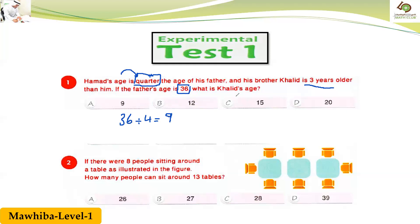Now, in the other sentence: his brother Khalid is three years older than Hamad. So we add three years here. Nine plus three equals what? Equals 12. So Khalid's age is 12. Do you understand, my student? Yes. The explanation is clear, or if you want me to explain again, I am happy — don't worry.